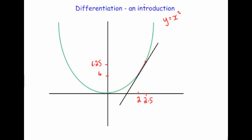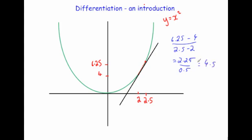Let's bring the chord a bit closer. Instead of going 3 across, I'm going to go 2.5 across. 2.5 squared is 6.25, so the gradient is 6.25 subtract 4, over 2.5 subtract 2. That gives 2.25 divided by 0.5, which equals 4.5. The gradient is getting less steep, and it's getting closer to the steepness of the tangent at coordinate (2, 4).